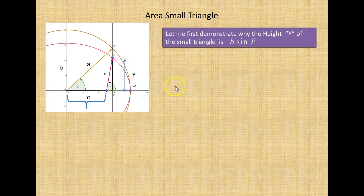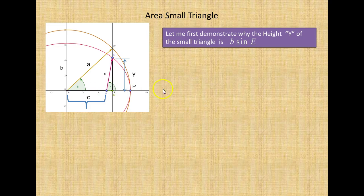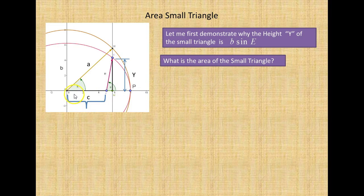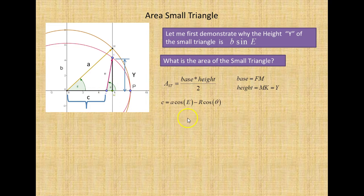Let me first demonstrate why the height Y of the small triangle is B sine E. You might think why isn't it R times sine of the true anomaly? That's what I want to show you. The area of the small triangle is one half the base times the height, where the base is F-M and the height is Y. We know the leg of the large triangle is A times cosine of E, from O to M. If we subtract R cosine theta from that base, we get C.